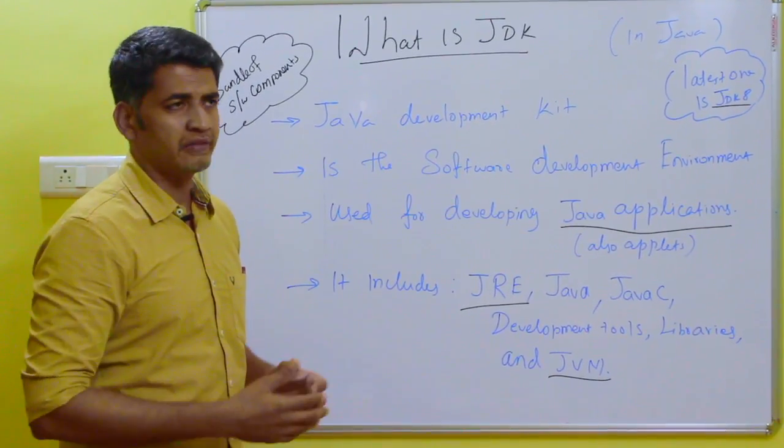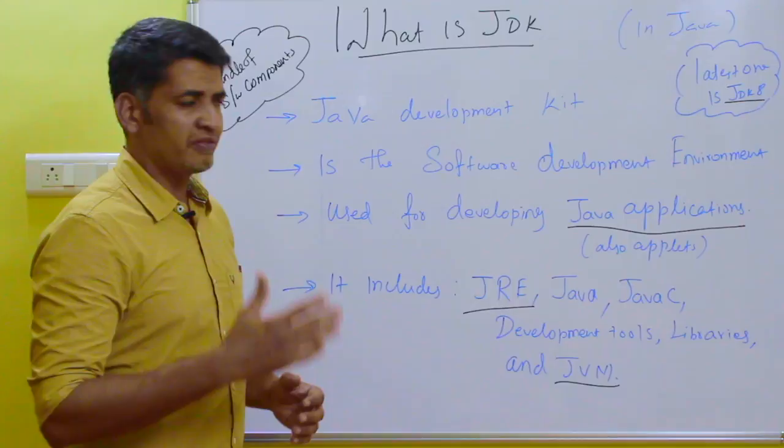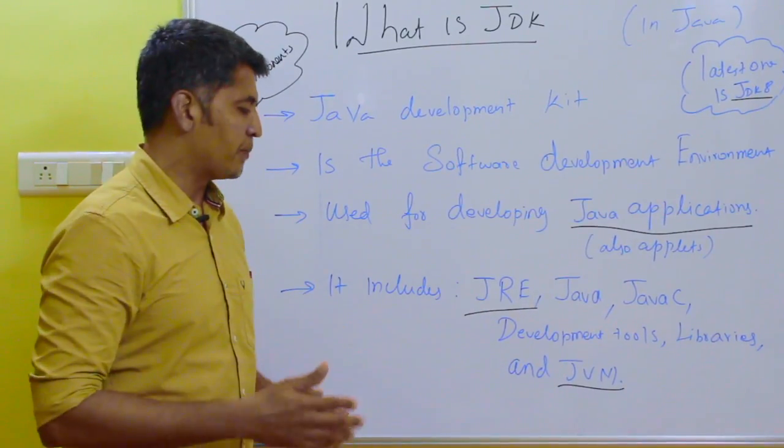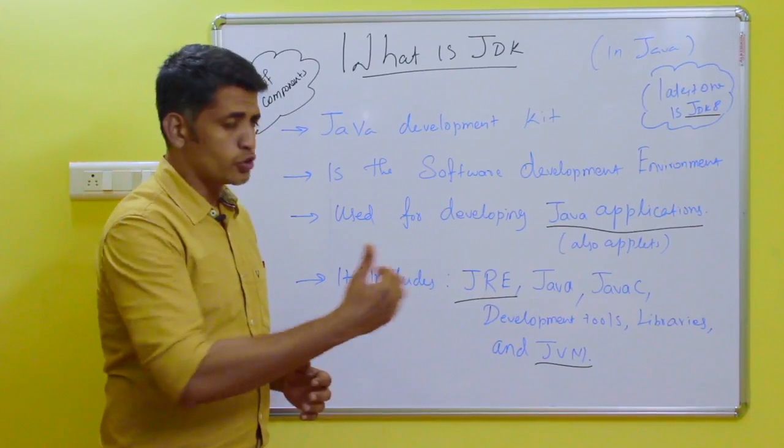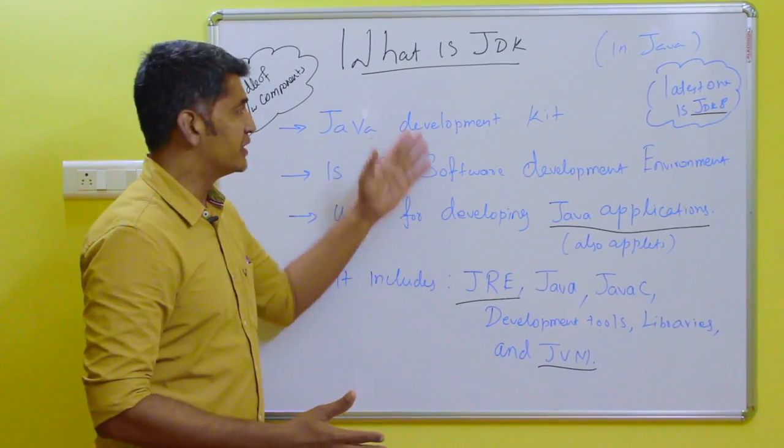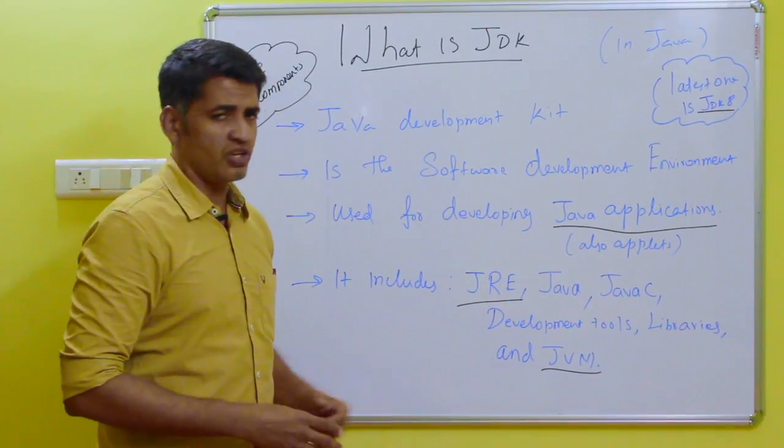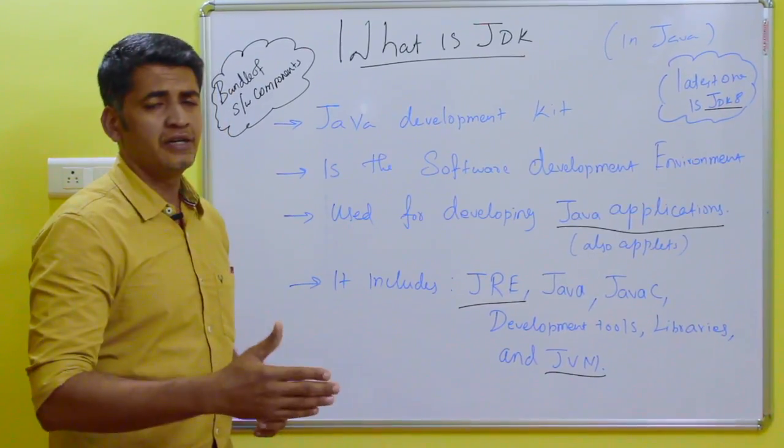Before you execute a Java program, you need to compile the Java program with the help of Java compiler. Fourth one is development tools, and also libraries and APIs are available with the JDK. And last one is JVM, which means Java Virtual Machine.